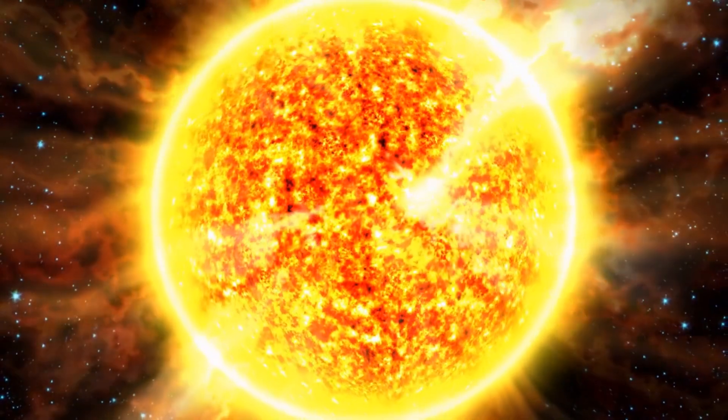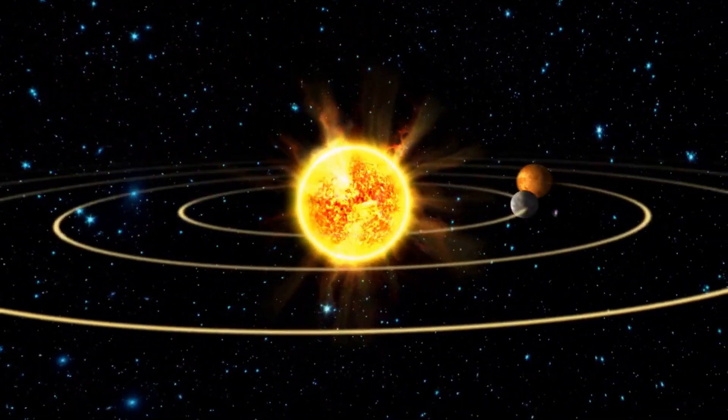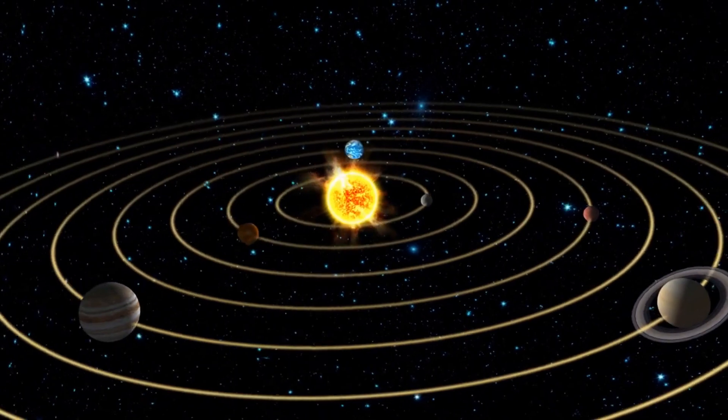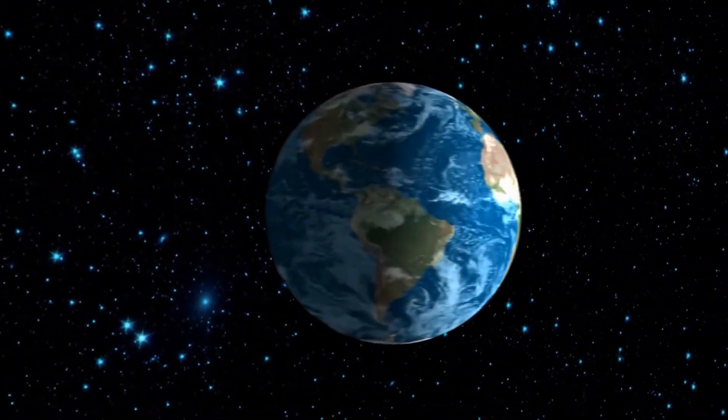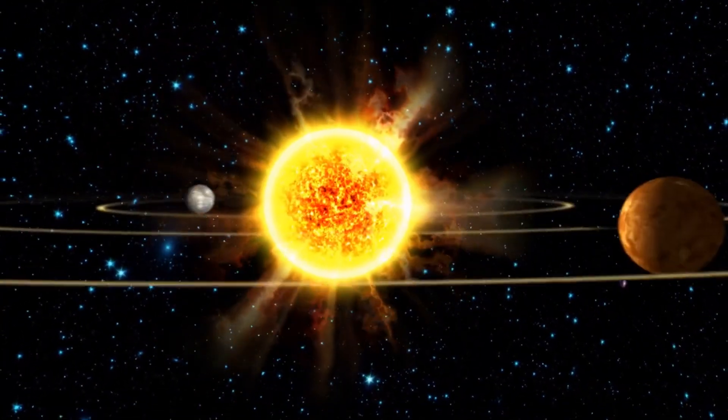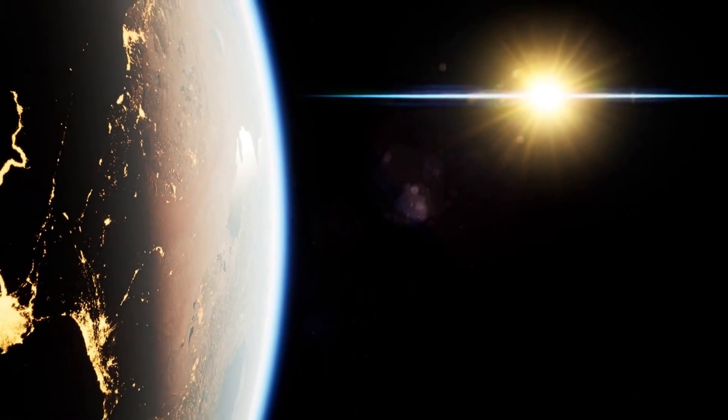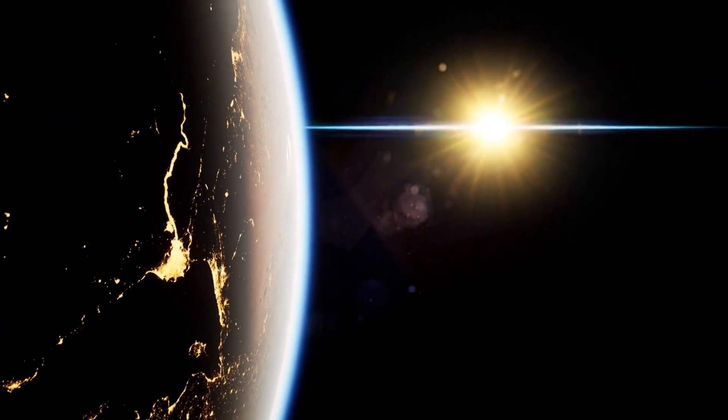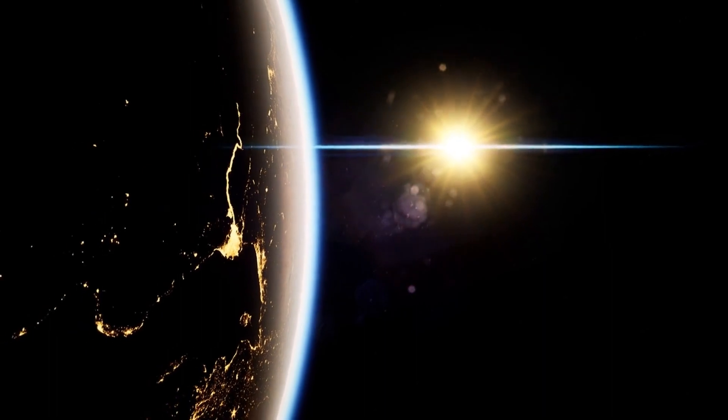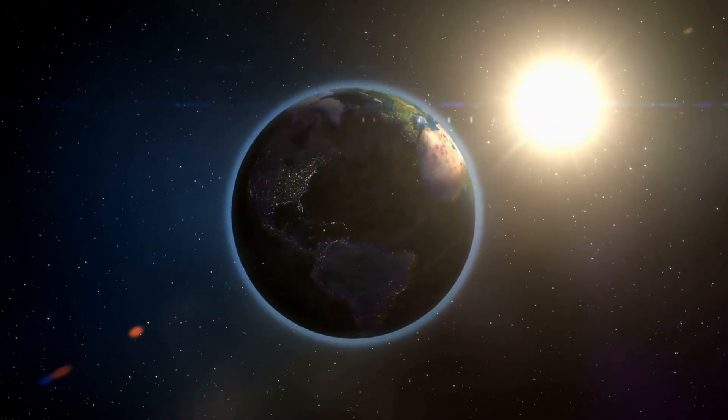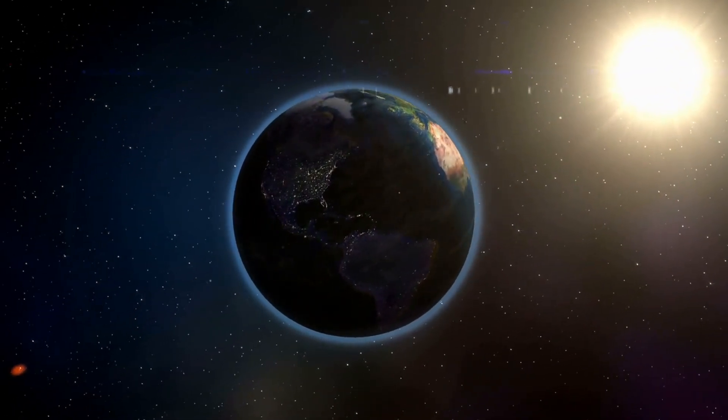Planets in our solar system also rotate around their axes, possibly due to processes related to their formation. Rotation of objects in the universe has important consequences. For example, the rotation of the earth around its axis determines the alternation of day and night. The rotation of planets around the sun determines their seasons and climates.